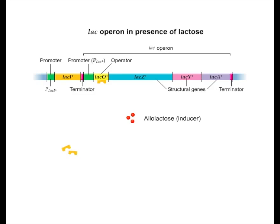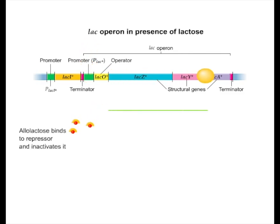The lac genes are expressed because allolactose binds to the lac repressor protein, changing its shape so that it cannot bind to the lac operator. RNA polymerase can then bind to the promoter and transcribe the lac genes.